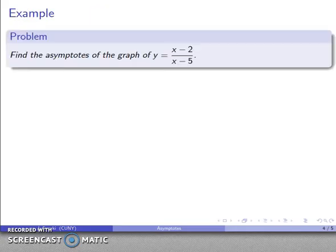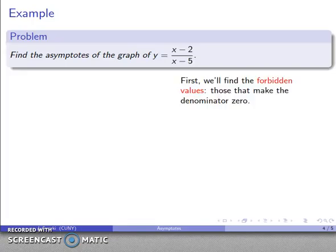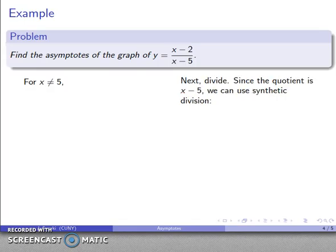Let's take a look at an example. We want to find the asymptotes of the graph y equals (x minus 2) over (x minus 5). The very first thing we should do any time we're confronted with a rational function is to find the forbidden values — those that make the denominator equal to zero. Our denominator is x minus 5, so that tells me that x cannot equal 5. The next thing we'll do is divide, and since the divisor is x minus 5, we can use synthetic division.